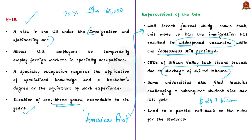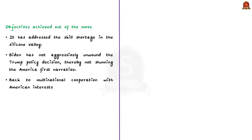The current US administration under President Joe Biden allowed the expiration of the ban, achieving two objectives: addressing the skill shortage in Silicon Valley, and not aggressively dismantling Trump's policy decisions — thus not totally discarding the 'America First' narrative. For the USA, it became a win-win situation: this policy decision set America back on track with its relations with India and other countries, while maintaining American interests.